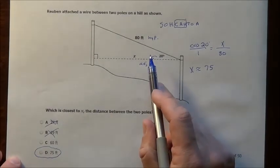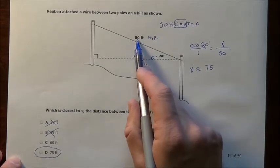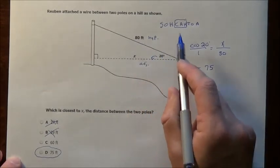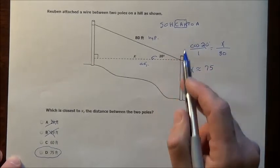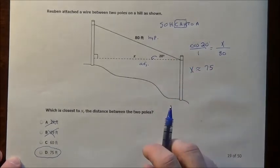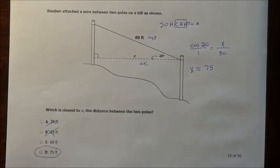As soon as you see a right triangle, think Pythagorean theorem, but if you only have one side and you have an angle, that's telling you you've got to go to these trigonometry functions of sine, cosine, and tangent to help you figure out the answer. There's problem number 19 for you.